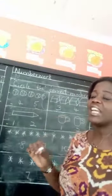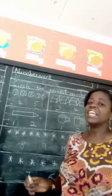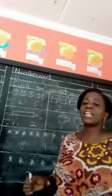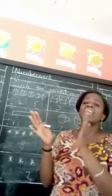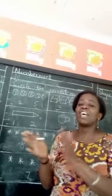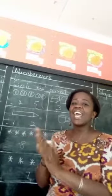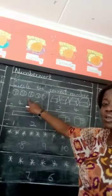Can we count one up to ten quickly children? One, two, three, four, five, six, seven, eight, nine, ten. So let us look at the blackboard. The first pictures that we have are balls.